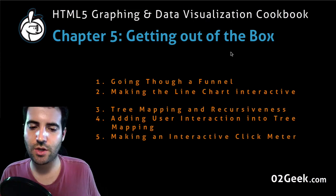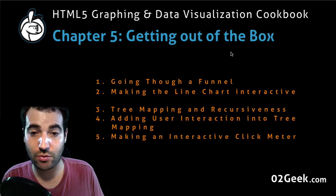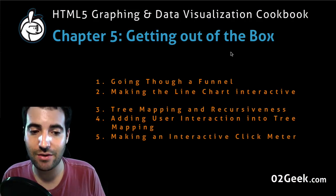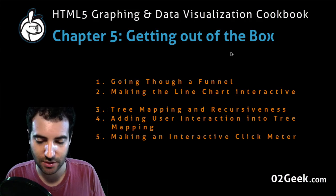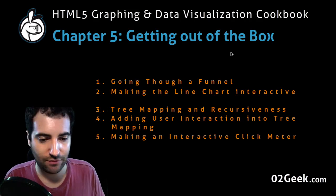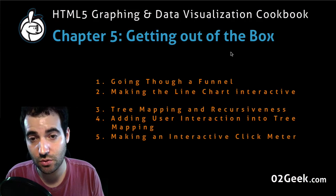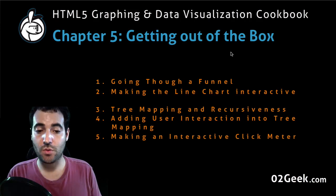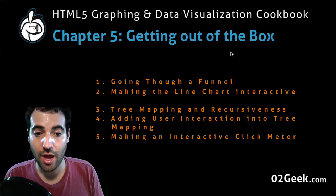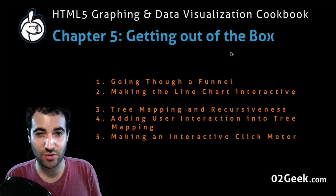What you should do: the best exercise is to pick anything you created already in chapter three or four and revisit it, adding all these functionalities we're adding in chapter five. If it's click interaction, dynamically changing things, loading from an XML, or finding ways to do recursive logic — try to find one recipe, one chart, and really flesh it out and enhance it.